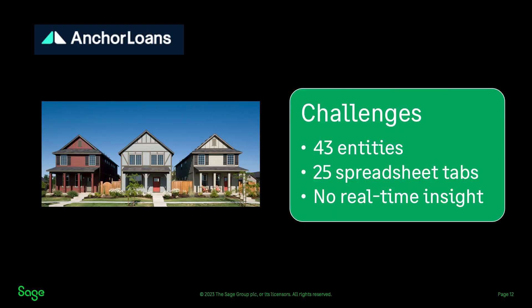Anchor Loans is an example of a company using QuickBooks that switched to Sage Intact. Anchor Loans is one of the largest fix-and-flip and new construction lenders in the U.S., providing real estate developers with financing to renovate or build residential and commercial properties. The company relied on an entry-level combination of QuickBooks and Excel, but that wasn't scaling as revenue and complexity increased. The finance team labored with time-consuming manual consolidations across 43 entities, each requiring its own QuickBooks instance. They ended up using a spreadsheet with 25 tabs, so they had no real-time insights to make faster, smarter decisions. In the words of CFO Brian Thompson: when you have many entities, exporting financials from QuickBooks to Excel for consolidation was an ongoing nightmare. He told the CEO, 'If you want reliable, timely financial information, we can't do it in QuickBooks — it's too cumbersome and too manual.'